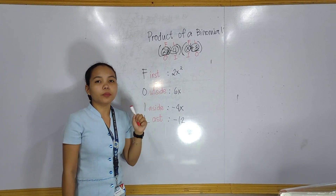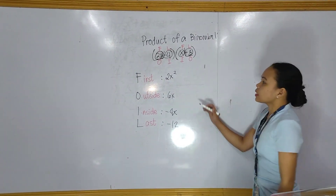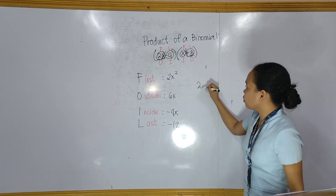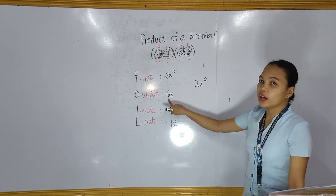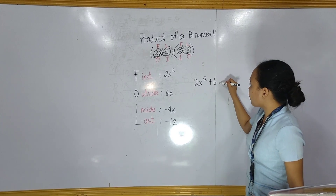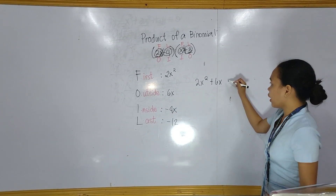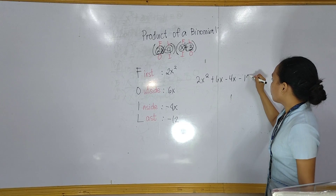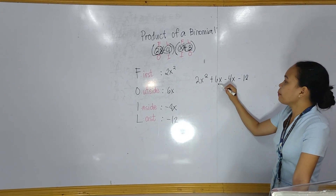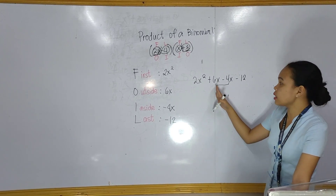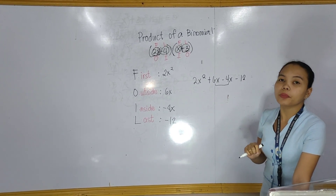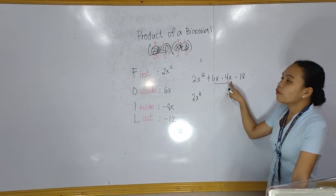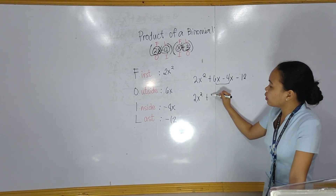Now we will combine the like terms. Since 2x squared has no like term, we copy 2x squared. Then we have positive 6x and negative 4x as like terms, so we combine those. So we write 2x squared, then positive 6x minus 4x, which gives us positive 2x.